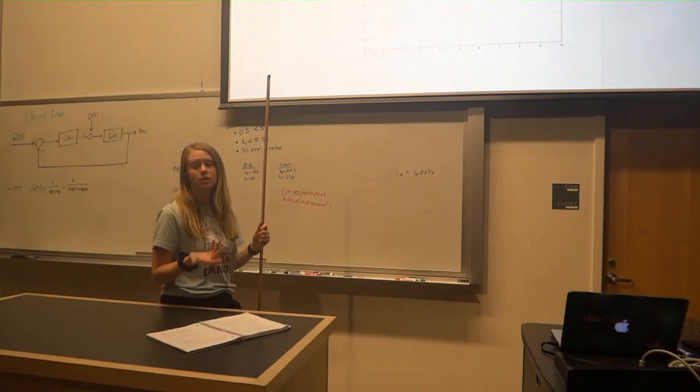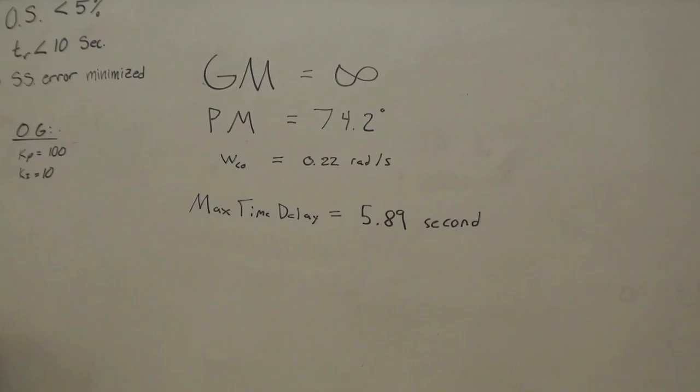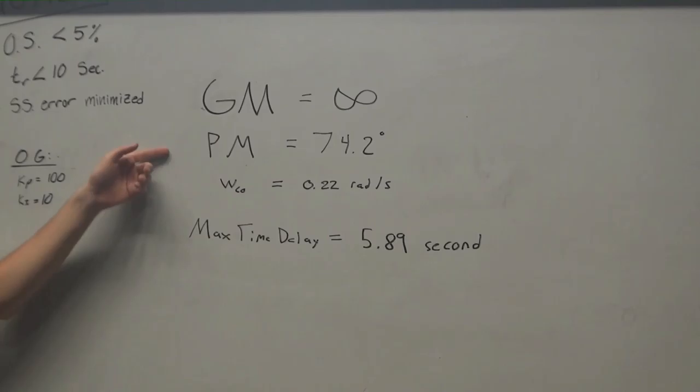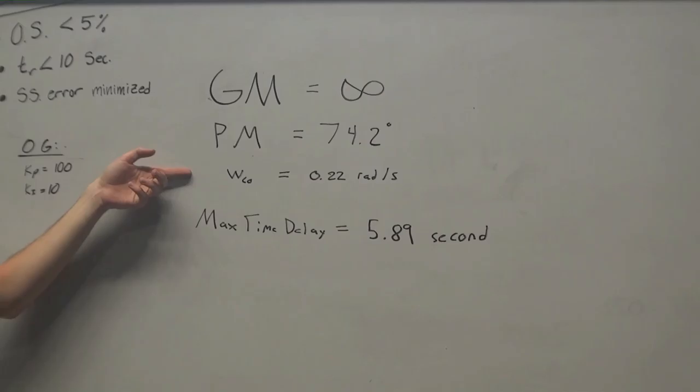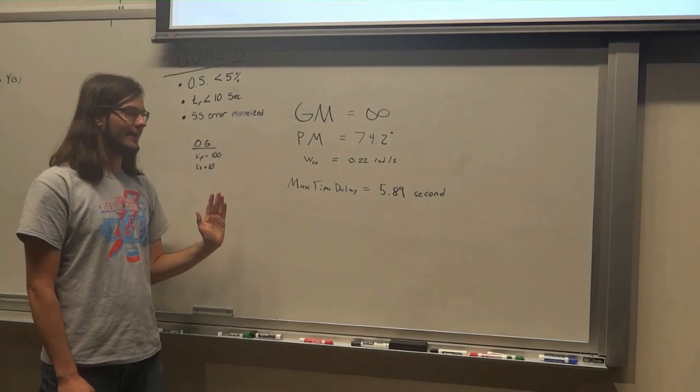For our robustness analysis, we found that our gain margin was equal to infinity, which means that we can increase our gain as much as we want and the system will not become unstable. And then we also found our phase margin and our cutoff frequency to be 74.2 degrees and 0.22 radians per second. With these values, we can find our maximum time delay, which is equal to 5.89 seconds. This means that anything below that time delay will remain stable. Anything above it will become unstable.